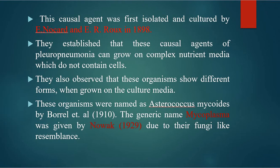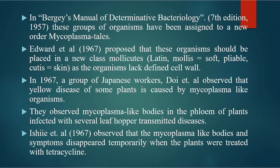They established that the causal agent of pleuropneumonia can grow on complex nutrient media which do not contain cells. They also observed that these organisms showed different forms when grown on culture media. These organisms were named Asterococcus mycoides by Borrel et al. The generic name Mycoplasma was given by Nowak in 1929 due to their fungi-like resemblance. In Bergey's Manual of Determinative Bacteriology, these groups of organisms have been assigned to a new order, Mycoplasmatales.